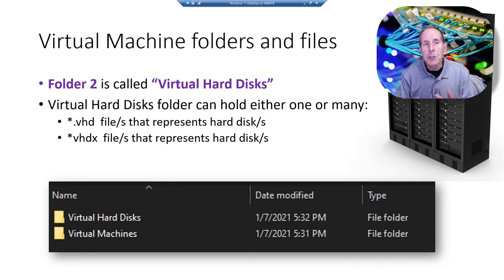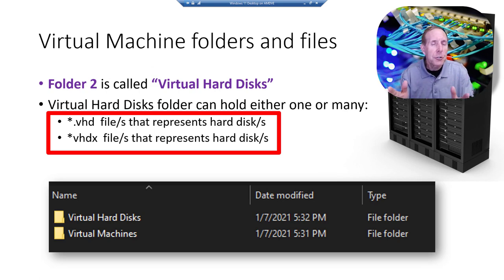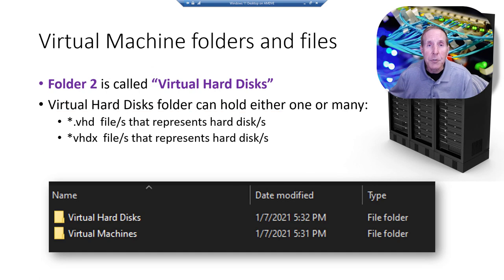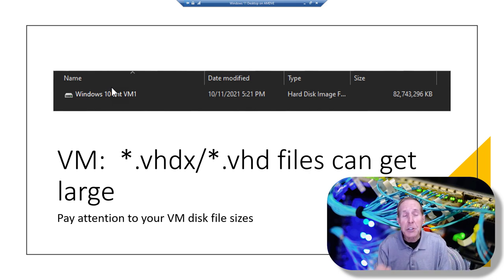In our second folder for virtual machines, it's called Virtual Hard Disk. You're going to have either VHDs — one or many — which are generation one virtual hard disks. If you have generation two virtual machines, you're going to have VHDX for your virtual hard disks. You can have one or many depending on the controller you install and how many hard drives you want on each virtual machine. Watch your size — virtual hard disks can get large really quickly, so pay attention.